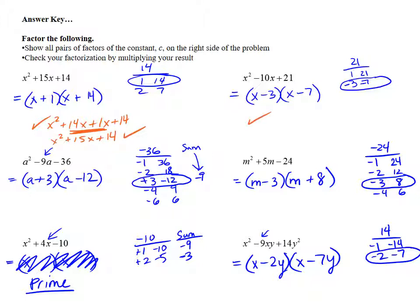I'll check our next example. x times x is x squared. Outside terms minus 7x. Inside terms minus 3x. Finally, minus 3 times negative 7 is positive 21. Adding up the middle terms, negative 7x minus 3x is minus 10x plus 21. That's exactly where we started.